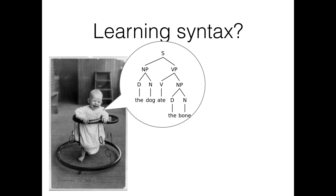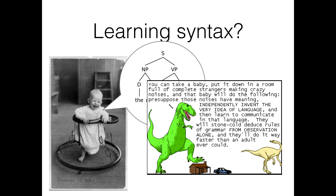As usual, Dinosaur Comics says it best. T-Rex says: you can take a baby, put it down in a room full of complete strangers making crazy noises, and that baby will do the following — presuppose those noises have meaning, independently invent the very idea of language, and then learn to communicate in that language. They will stone cold deduce rules of grammar from observation alone, and they'll do it way faster than an adult ever could.